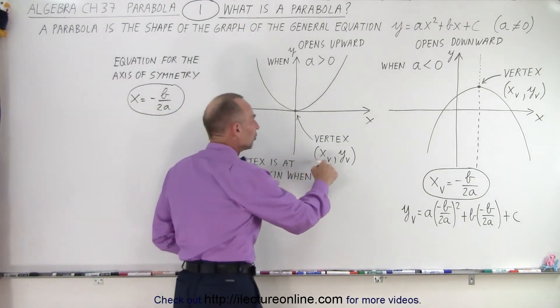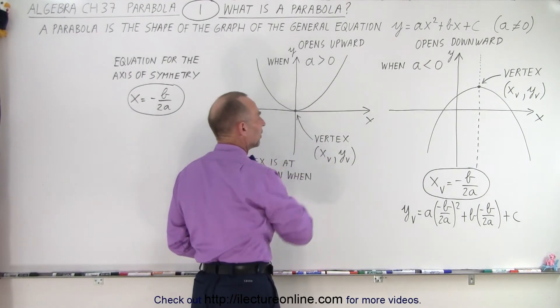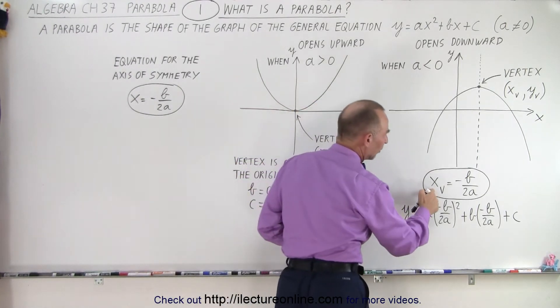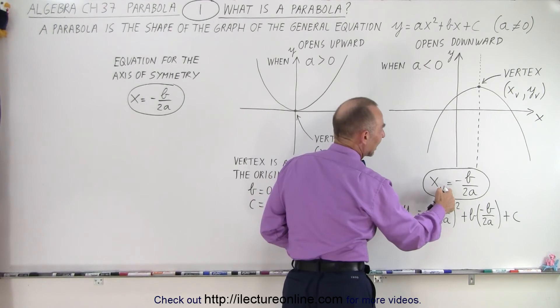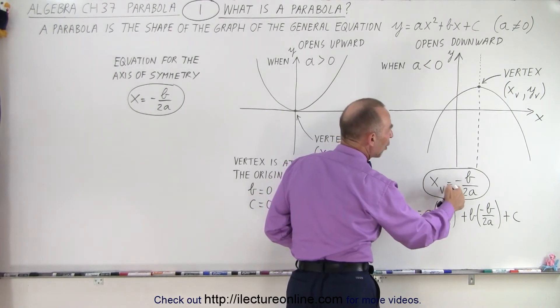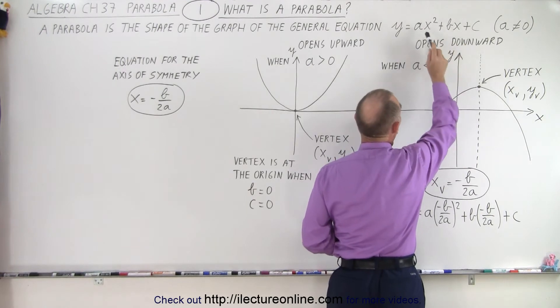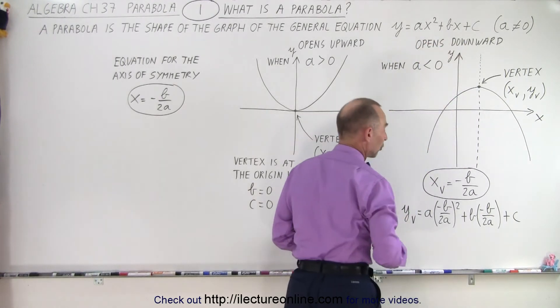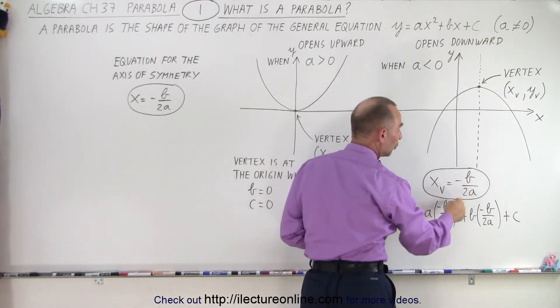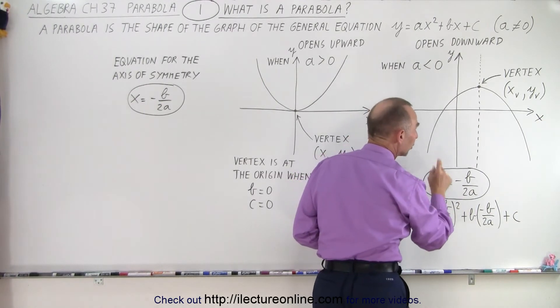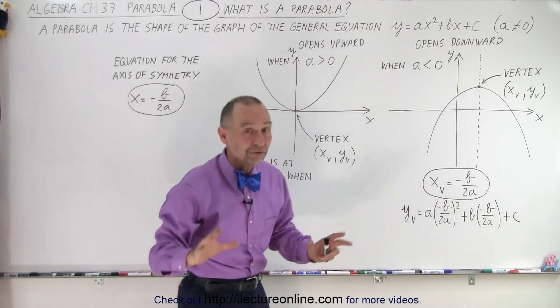What are the coordinates, the x and y coordinates of the vertex? Well, we can find the x-coordinate by setting that equal to minus b over 2a. Remember, b is the coefficient in front of the x term, and a is the coefficient in front of the x squared term. So, minus b over 2a is the x-coordinate of the vertex, no matter where that vertex is.